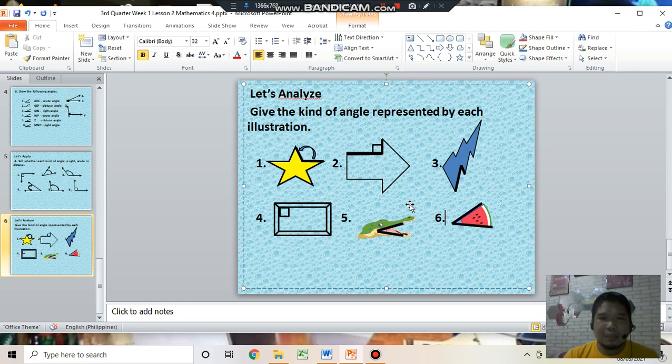That's all for today class about kinds of angle. Again, the kinds of angles are obtuse angle, right angle, and acute angle. That's all for today, grade 4. Thank you.